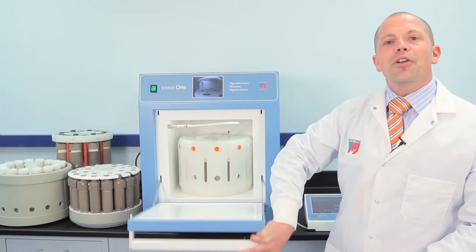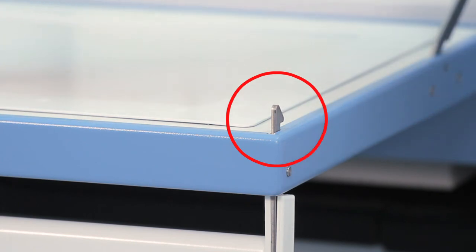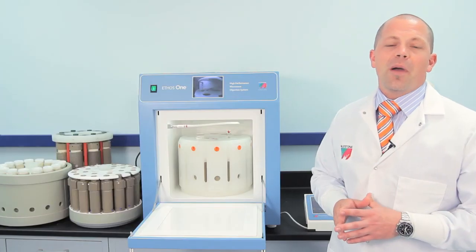The handle of the Ethos One securely fastens with twin latches that lock into steel enclosures. This door is locked closed until the completion of the microwave program.